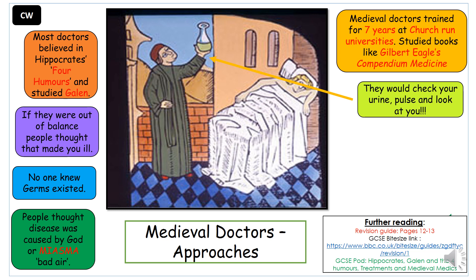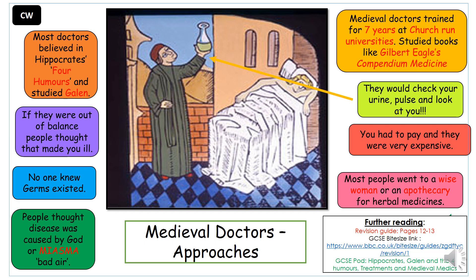One of the best ways a medieval doctor identified what was wrong with you was by examining your urine — looking at its colour, smelling it, or even tasting it — to identify what was going wrong in your four humours. They might also look at planets, stars, and astrology charts, or check your pulse. Medieval doctors were also expensive; very few people could afford to consult them. Instead, most people would see a wise woman in their village with knowledge of plants who could make herbal medicine, or an apothecary.